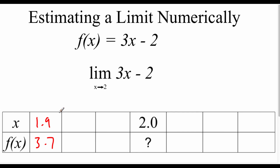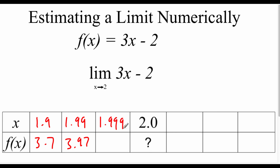Moving closer to 2, we go to 1.99. Replacing x with 1.99, we get about 3.97. Getting even closer to 2, we go to 1.999. Plugging that in, we get about 3.997. That's as we approach 2 from the left-hand side.